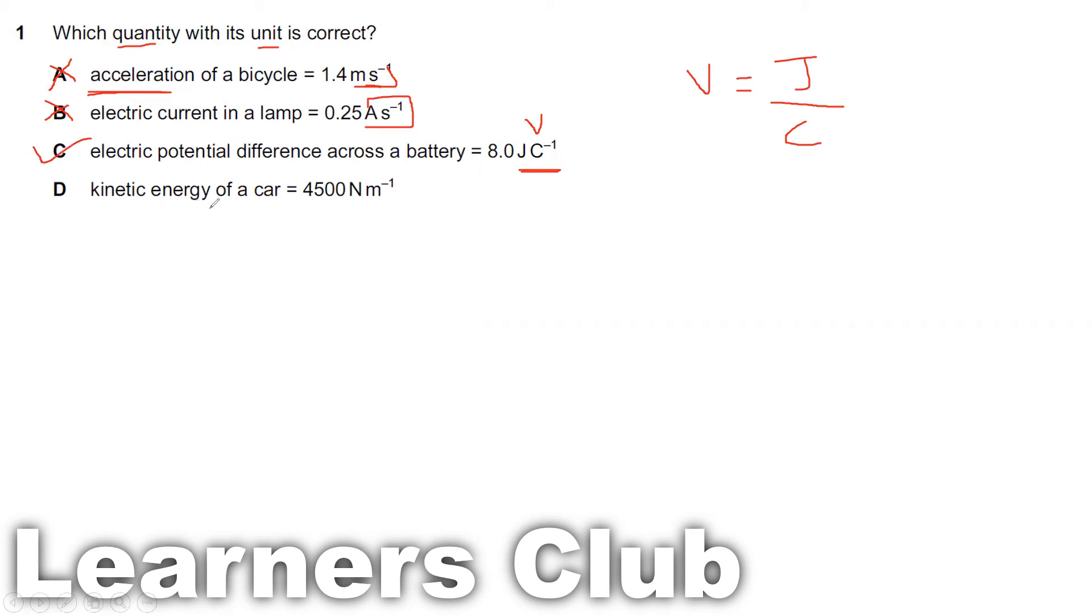Let's check the other one. Kinetic energy of a car, 4500 newton per meter. So kinetic energy is joule. Energy is force into distance, or you can also write it as newton meter. But here they have written newton per meter. So this is incorrect. Therefore the answer is C.